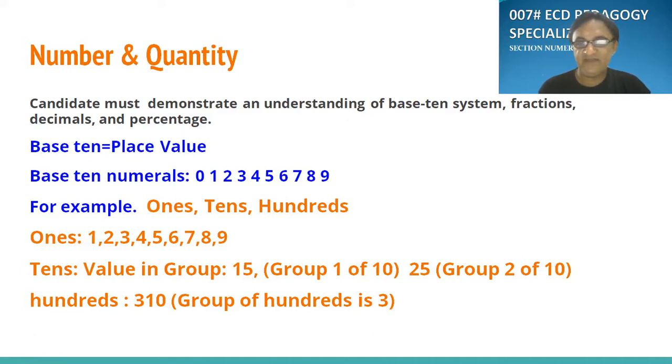What type of questions you can face in the numeracy session? I have taken some from the place value. Base 10 and place value both are the same. Base 10 numerates are from 0 to 9. For example, ones, tens and hundreds are the example of the base 10s. This is the ones and the tens values in the group means how much group of 10 it is in this value. So in 15, group of 1 of 10 and 5 is the unit or ones. In 25, 2 groups of 10. Similarly, in 310, a group of 100 is 3 and a group of 10 is 1.